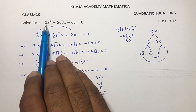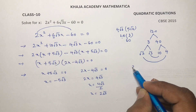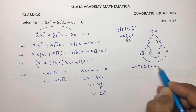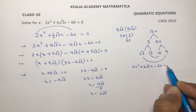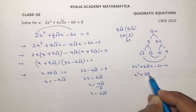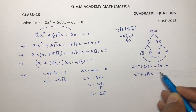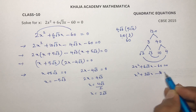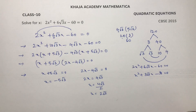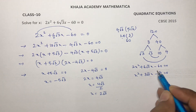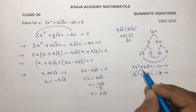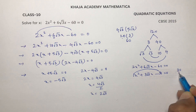In the beginning, if you want, you can take 2 common and simplify. So 2x squared plus 6 root 3 x minus 60 — the equation becomes x squared plus 3 root 3 x minus 30. For this also, if you want, you can factorize. Here 1 into 30 gives 30.